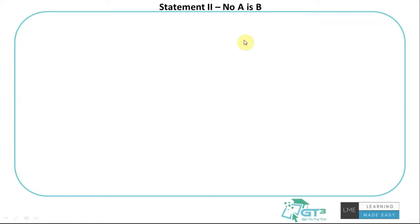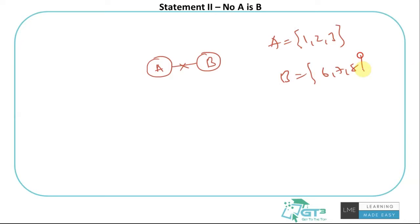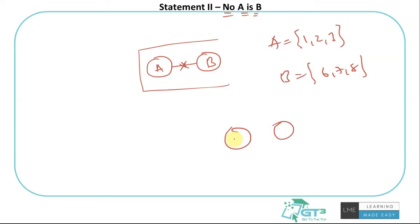The second statement is: No A is B — none of the elements in A are in B. We draw two completely separate circles with no connection between them. If A is {1, 2, 3} and B is {6, 7, 8}, there is no common element. That's why the diagram shows no overlap. It's fine to just draw them as two separate circles — that's good enough.